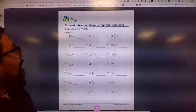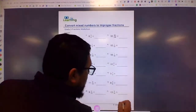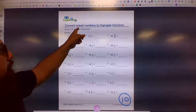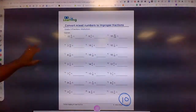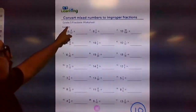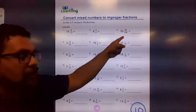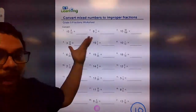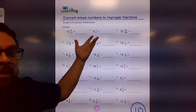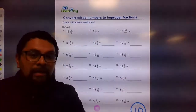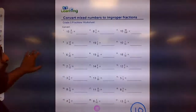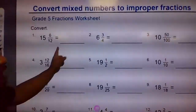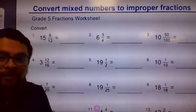All right class, now this is page 10. This is the same as page 9 — you're going to convert mixed numbers to improper fractions. The difference is this is fifth-grade level, so the numbers are bigger. You might need a calculator. I'm letting you use a calculator — that's fine. You can also just multiply it out on paper. Let me zoom in on the first three and then you can do the rest.